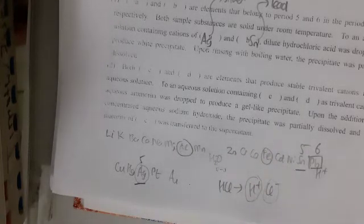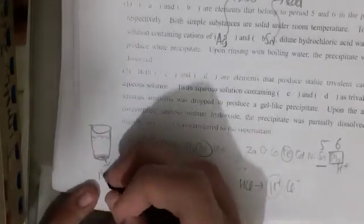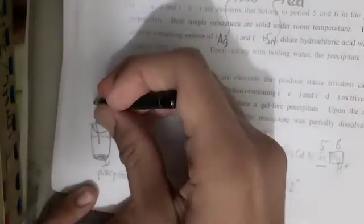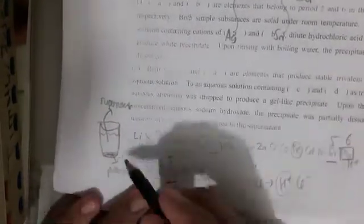It says that the precipitate was partially dissolved and majority of one of these is transferred to the supernatant. Do you know what is supernatant? Actually, if you have a test tube or a beaker for your reaction, let's say this is water and you have a precipitate. This is the precipitate. And the rest, which is dissolved, this is the supernatant. Meaning that the supernatant is more reactive than the precipitate.